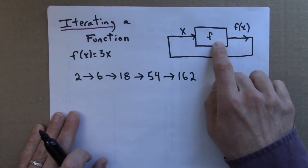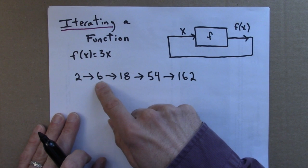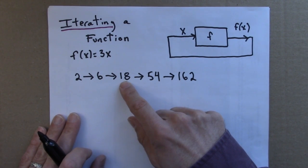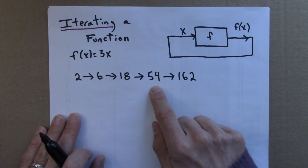So, I'm applying the function f to 2, I get 6. I apply f to 6, I get 18. I apply f to 18, I get 54, and so on.